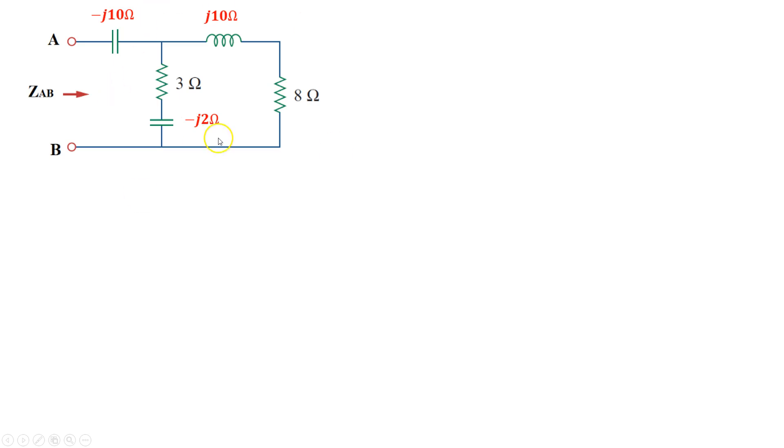Now, if I look at this network, I see that the 3 ohm resistor and the -j2 ohm impedance are in series with each other. Similarly, the j10 ohm impedance is in series with the 8 ohm impedance. We can redraw this circuit as following.